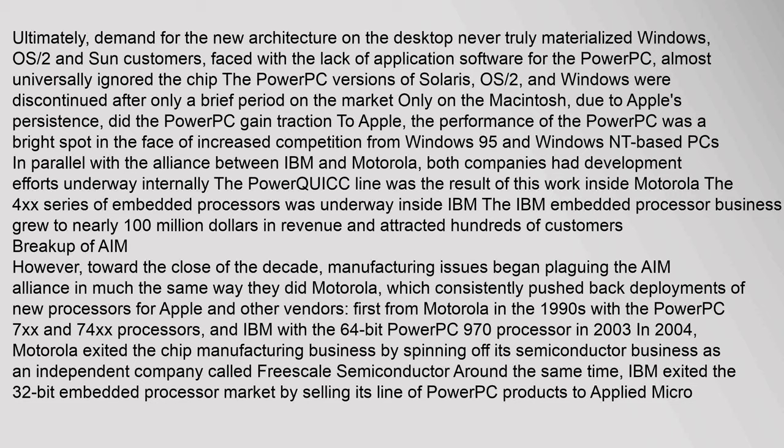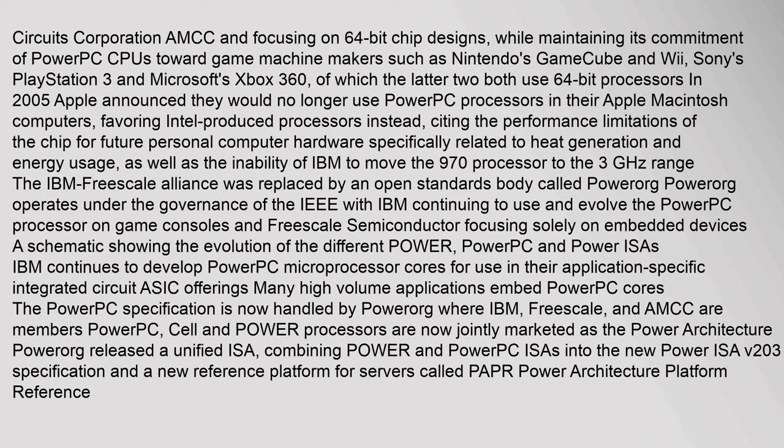The PowerPC versions of Solaris, OS/2, and Windows were discontinued after only a brief period on the market. Only on the Macintosh, due to Apple's persistence, did the PowerPC gain traction. In parallel with the alliance between IBM and Motorola, both companies had development efforts underway internally. The PowerQuick line was the result of this work inside Motorola. The 4xx series of embedded processors was underway inside IBM. The IBM embedded processor business grew to nearly 100 million dollars in revenue and attracted hundreds of customers.